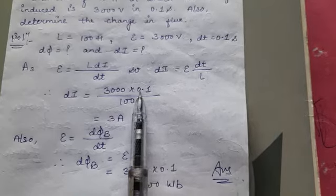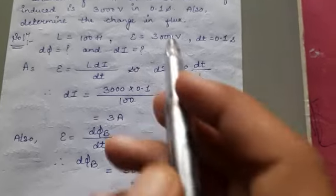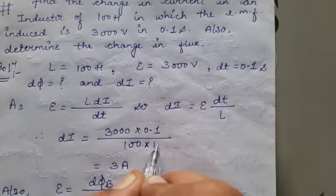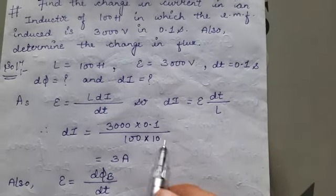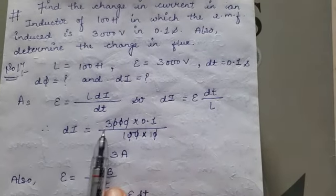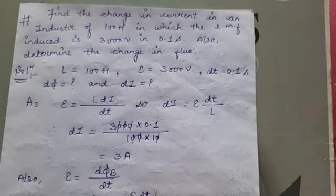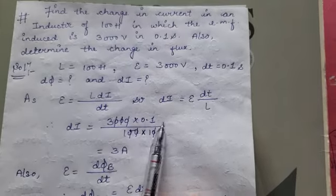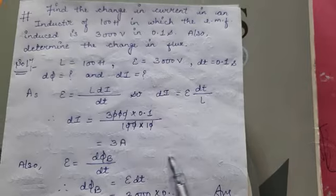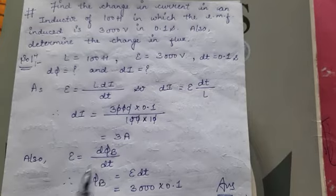When you solve, remove the decimal point - 10 zeros cancel out. 3000 into 0.1 divided by 100 equals 3 ampere. This is the unit of current.